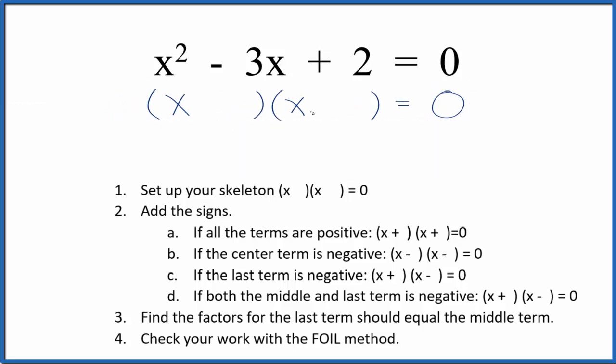Now we want to figure out the signs that go in our skeleton equation. If we have a negative here on the middle term, and this last term is positive, so if the center term is negative, we're going to have negative, negative right here in our skeleton equation.